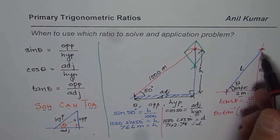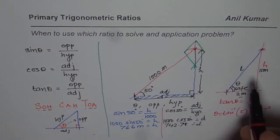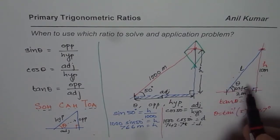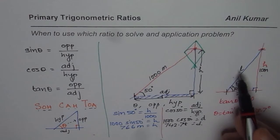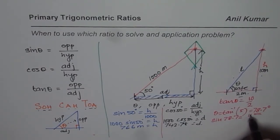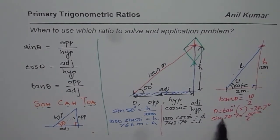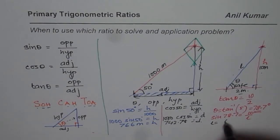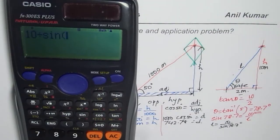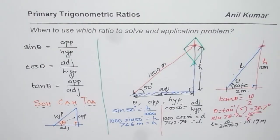Now if we want to know the minimum length of the ladder required, we can use sine or cosine since the hypotenuse is involved. We write sine of 78.7 degrees equals 10 over L. Cross-multiplying and solving, the length of the ladder equals 10 divided by sine of 78.7 degrees, which gives approximately 10.19 meters, or about 10.2 meters rounded.